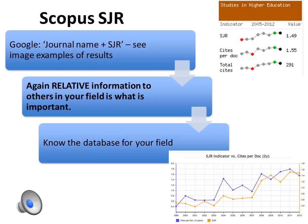Scopus SJR have a site with an alternative to impact factors. An easy way to find it for your journal is to Google the journal name and then the letters 'SJR' and go to the top link. The SJR indicator and the sites-per-doc measure — which is rather like impact factor, showing how many times each paper gets cited — are both available, and you can see their trend over a five-year period. You can see whether a journal is going up in the world or becoming less important. Again, you have to find out the relevant relative information, not just the absolute value — for example, you need to check whether a SJR value of 1.49 is high, low, or in the middle for your field.